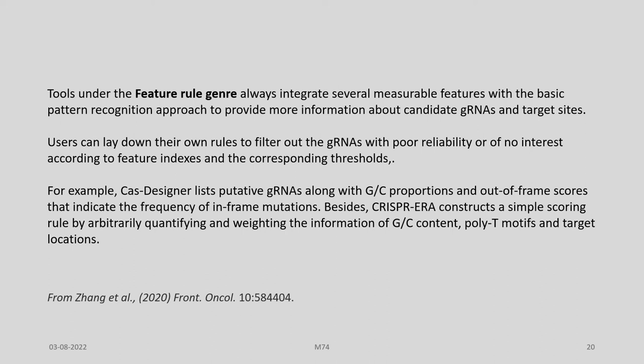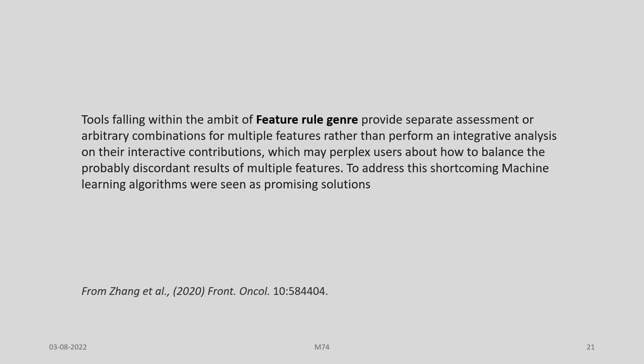Users can apply their own rules to filter out gRNAs with poor reliability according to feature indexes and corresponding thresholds. For example, Cas-Designer lists putative gRNAs along with GC proportions and out-of-frame scores indicating the frequency of in-frame mutations. CRISPR-ERA constructs a simple scoring rule by arbitrarily quantifying and weighing GC content, quality motifs, and target locations. Tools in the feature rule genre provide separate assessment or arbitrary combinations for multiple features rather than performing an integrative analysis, which may perplex users about how to balance discordant results.